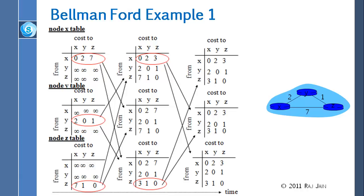There are three nodes: x, y, and z. The complete table for x is: cost to x is 0, cost to y is 2, cost to z is 7, and it doesn't know z's costs. Similarly, y says cost to itself is 0, to x is 2, to z is 1, and it doesn't know their costs.